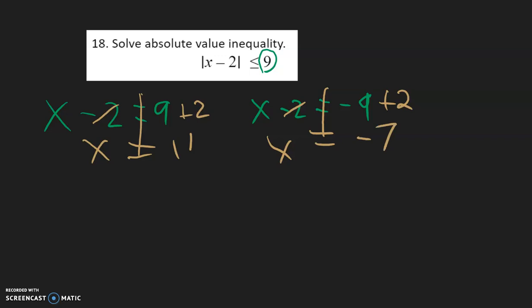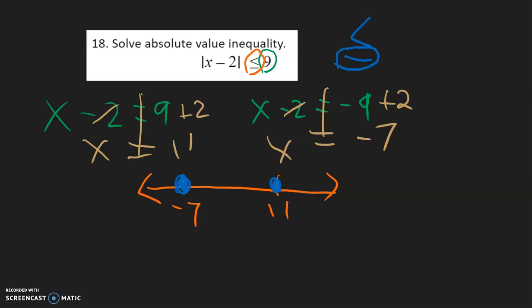Now we need to draw a number line because this is an inequality. Negative 7 is smaller, so that goes on the left side. 11 is bigger, so that goes on the right side. And this is less than or equal to, so the circles need to be filled in because we have the equal to part underneath the inequality. Less than means we want to go inside. Closed circle means we need a bracket. Our answer is going to be bracket negative 7, 11, with a bracket.